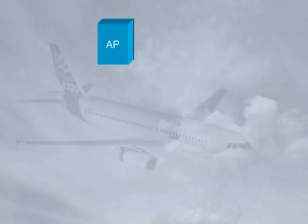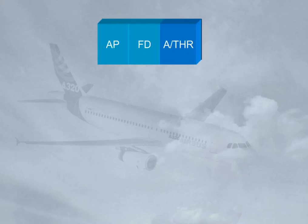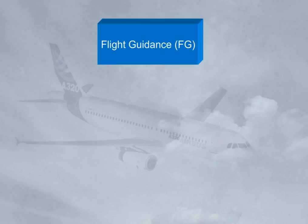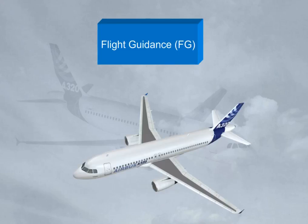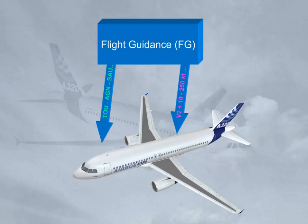The Autopilot (AP), Flight Director (FD), and Autothrust (ATHR) are all integrated within the Flight Guidance (FG). They operate in various modes so as to guide the aircraft to associated targets, such as speed, heading, glide slope, or FMS lateral flight plan. An FG mode and its associated target are managed when the FG guides the aircraft along the flight plan, or when the aircraft flies a speed profile computed by the FMGS.